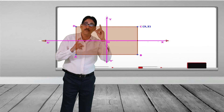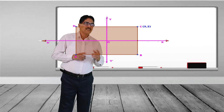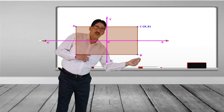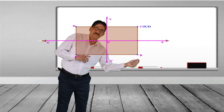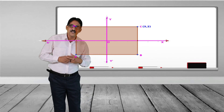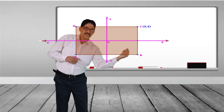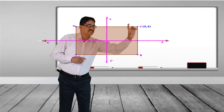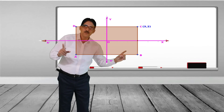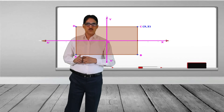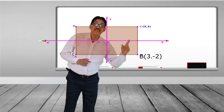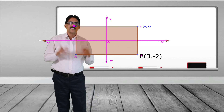Since sides are parallel to the axes and C is (3, 2), the x-coordinate of B is also 3. To find the y-coordinate of B: since origin is the midpoint, this distance and that distance are the same, so the y-coordinate is minus 2. Therefore the coordinate of B is (3, -2).